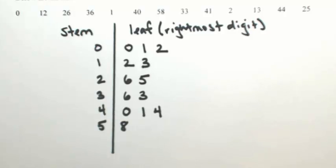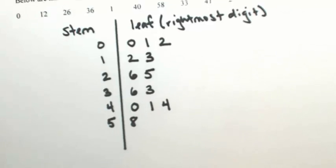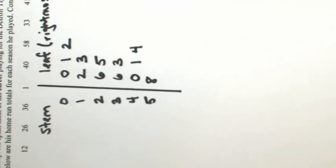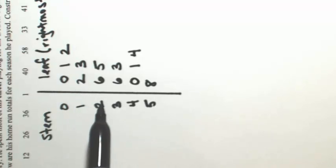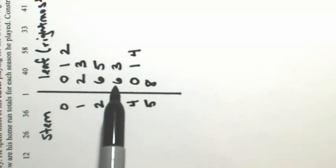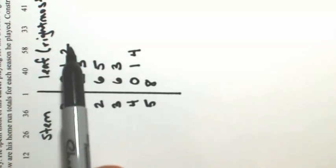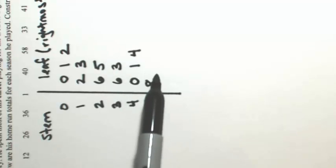One neat thing about the stem plot is that if you turn it to the left, you actually have a detailed histogram. The 0 represents 0-9, and you have 3 numbers in that category. The 1 represents 10-19, with 2 numbers. The 2 represents 20-29, with 2 numbers. If I made these into bars, this would be a very detailed histogram.